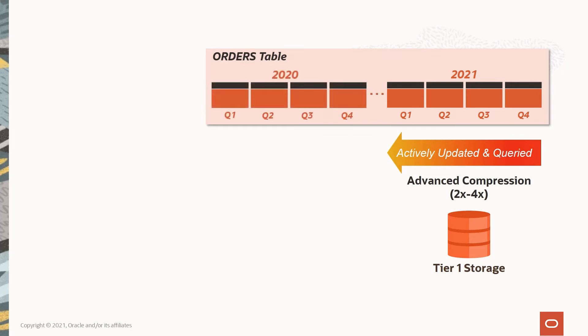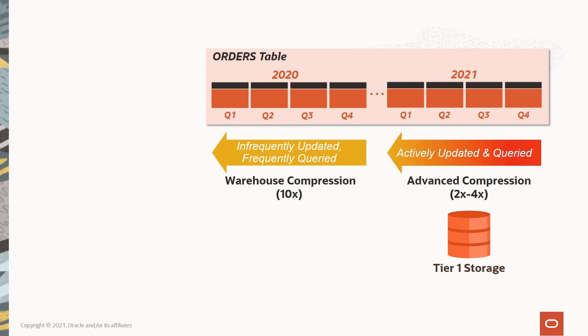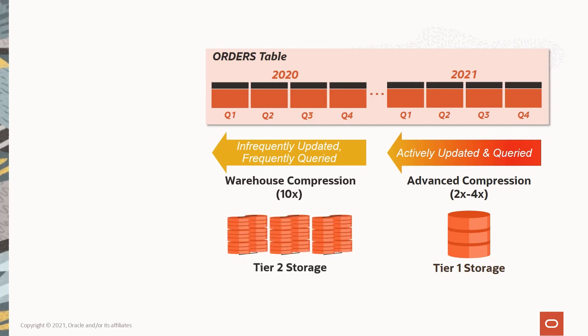We'll probably want to keep several years' worth of data for year-over-year comparisons, order history, and other reporting and analytics. As our data ages, activity declines — especially updates and inserts — which gives us the opportunity to increase compression and save even more on storage. For example, using Oracle Warehouse Compression gives us much higher compression ratios in the realm of 10x or more without sacrificing query performance, and we may also decide to move the data to lower cost storage.